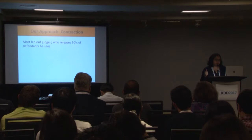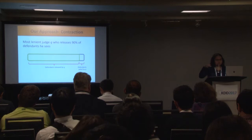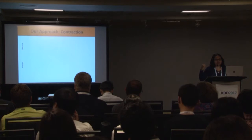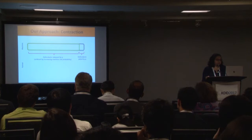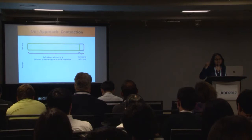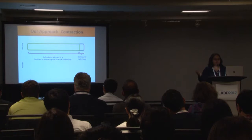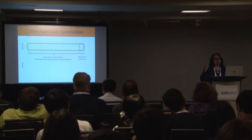The green set corresponds to defendants released by the most lenient judge Q, and gray to those jailed. We want to simulate the algorithm to release 60% of defendants and compare the resulting crime rate to that of Judge Jay. Because of the selective labels problem, the trick is: let the algorithm jail the same set of people who are being jailed by the most lenient judge Q.